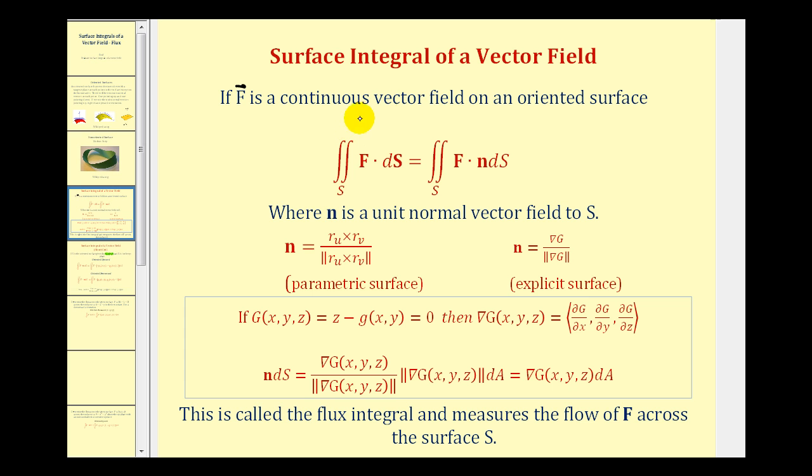Now let's talk about the surface integral of a vector field. This surface integral is often called the flux integral and it measures the flow of f across the surface s. It's equal to the double integral of f dotted with n integrated with respects to s where s is the surface. And n is a unit normal vector field to s.